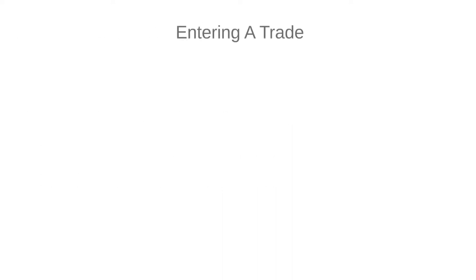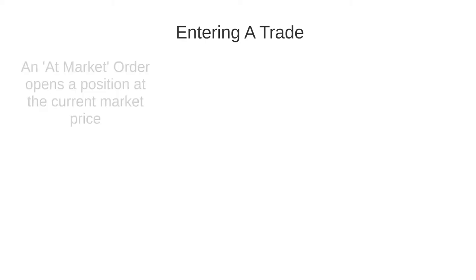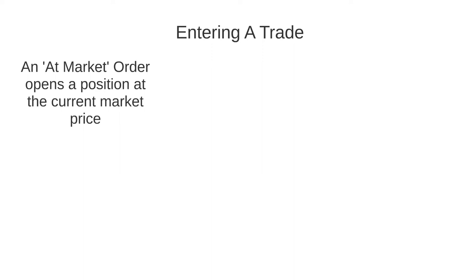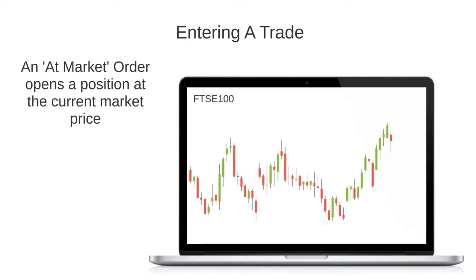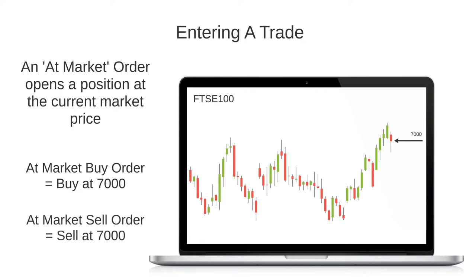Let's start with entering a trade and let's first look at an at-market order. Basically this order opens a buy or sell position depending which direction you want to take at the current market price. Let's say for example that I wanted to open a buy position on the FTSE 100 and it was currently trading at 7000. If I were to open the position with an at-market order, I would buy the market at 7000. Alternatively, if I were to open a sell position using an at-market order, I would sell the market at 7000.